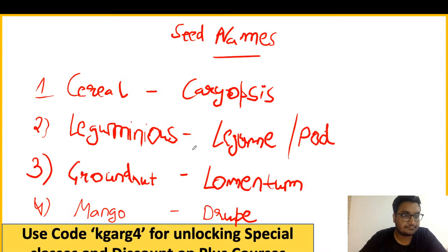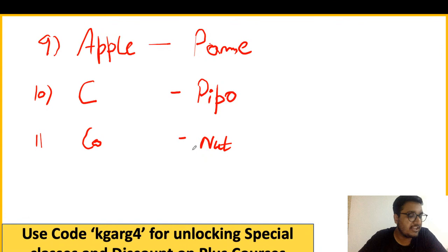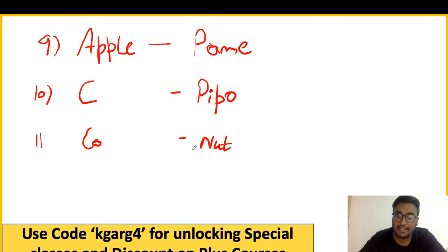Summary of seed types: Cereal crops — karyopsis. Leguminous crops — legume or pod. Groundnut — lomentum. Mango — drupe. Bear, plum, date palm — drupe. Tomato, grapes, brinjal, banana, chilies, papaya — berry. Citrus — hesperidium. Pomegranate — balausta. Apple — pome. Cucurbits — pepo. The PDF will be shared on Telegram in a proper written format.